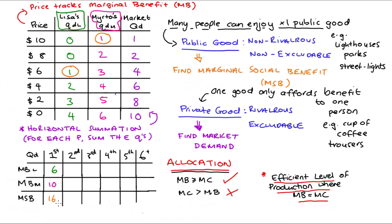For the second unit, the marginal benefit for Murthal is $8 and for Lisa it's $4, so the marginal social benefit is $12 — $8 plus $4. For the third unit, the marginal benefit for Murthal is $6 and for Lisa it's $2, so the marginal social benefit is $8 — $6 plus $2. For the fourth unit, the marginal benefit for Murthal is $4 and for Lisa it's $0, so the marginal social benefit is $4 — $4 plus $0.